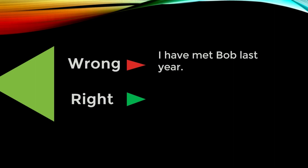Consider: 'I have met Bob last year.' Where is the error? The error is in 'have' — we cannot use the present perfect tense when we say 'last year.' With present perfect tense, you can't use a finished time. A finished time means something like last year, yesterday, last month, last winter, or even two hours ago — anything that has already passed. When you use present perfect tense, you cannot use a finished time.